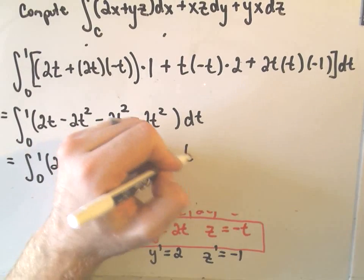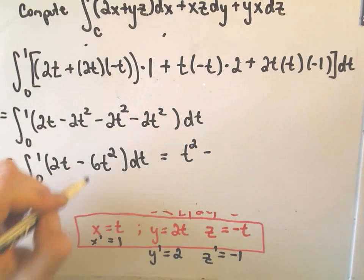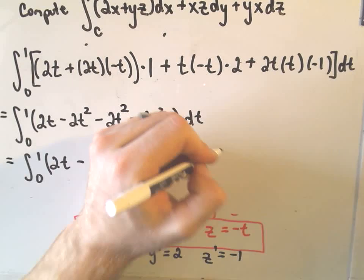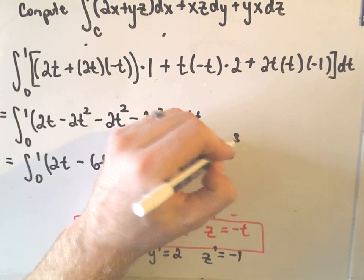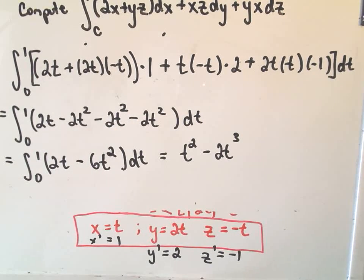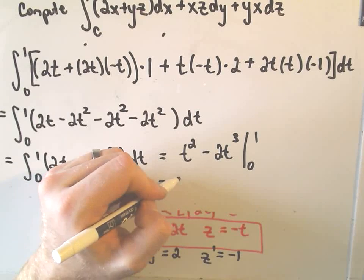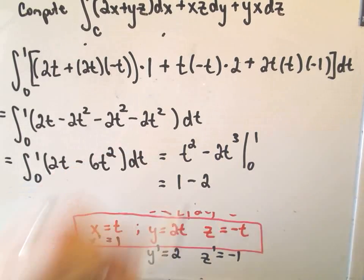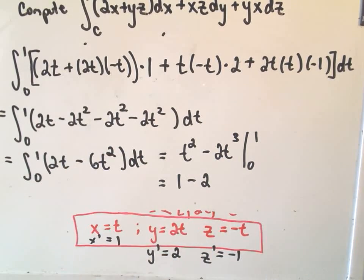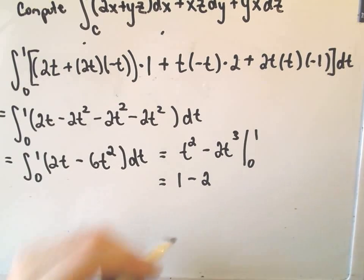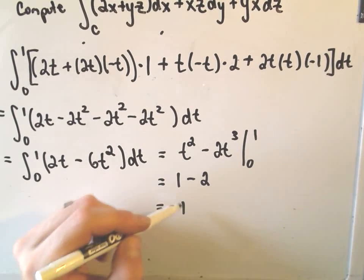Okay, so if we integrate 2t, we just get t squared. If we integrate 6t squared, I guess we're going to get, what, 2t cubed, negative 2t cubed. And again, we simply have to evaluate this from 0 to 1. So if we plug in 1, we'll simply get 1 minus 2. Notice when we plug in the lower limits of integration, we're just going to get a bunch of 0s. So it says the value of this line integral along this curve is simply going to be equal to negative 1.